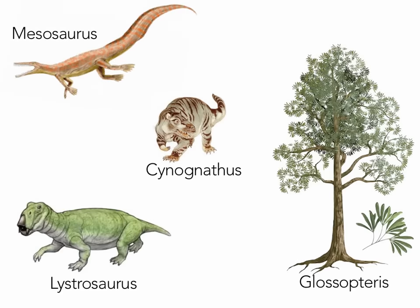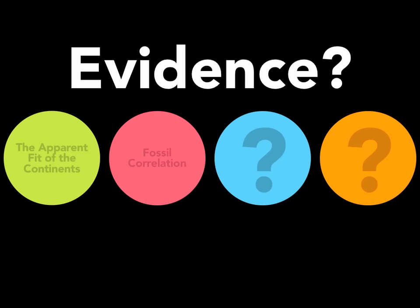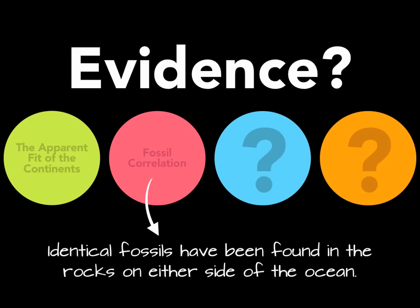Interestingly, Wegener found that there were other organisms that had similar fossil distributions — Cynognathus, Lystrosaurus, and Glossopteris being among the more notable ones. These fossils all have unique distribution patterns that suggest the continents were once together. And in fact, if you reassemble the continents and map out the locations of these fossils, they line up perfectly. That's our evidence number two: fossil correlation — matching up identical fossils found in rocks on either side of the ocean, suggesting the continents were once connected and must have drifted apart.